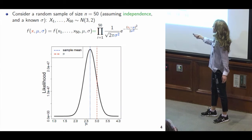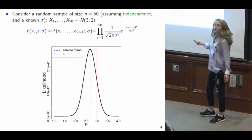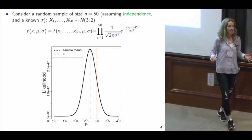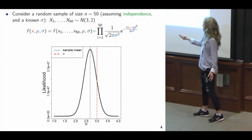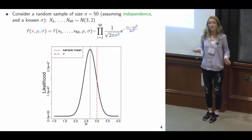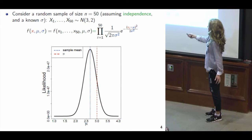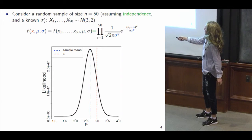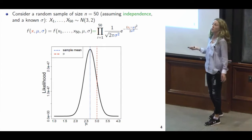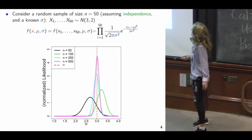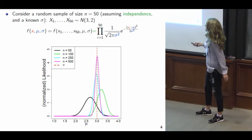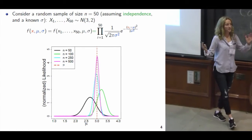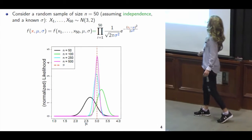Now suppose we get a larger sample size — 50 observations from the same normal distribution. Assuming observations were drawn independently, the joint distribution becomes a product of the marginal distributions. The likelihood function for mu, assuming sigma is fixed and known, is shown here. The blue dotted line shows the sample mean, which is where the likelihood is maximized. With a sample size of 500, we see the likelihood narrowing and peaking closer to the true value of 3.